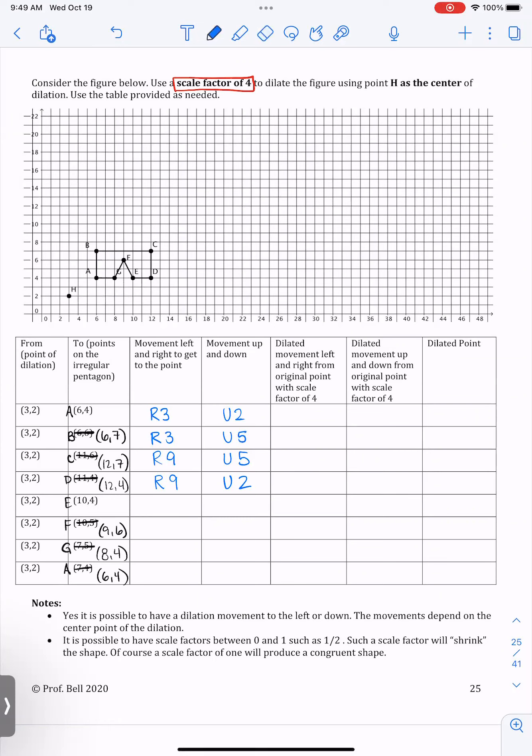For point E, that would be one, two, three, four, five, six, seven, yep, up two. So right seven, up two.